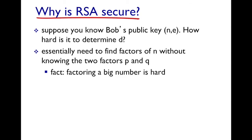Why is RSA so secure? If you know Bob's public key (n, e), you should not be able to determine his private key d. To find d you would need to factor n into its two prime factors p and q, which Bob chose. Factoring a large number is computationally very hard — it requires enormous resources and remains one of the hardest known computational problems.